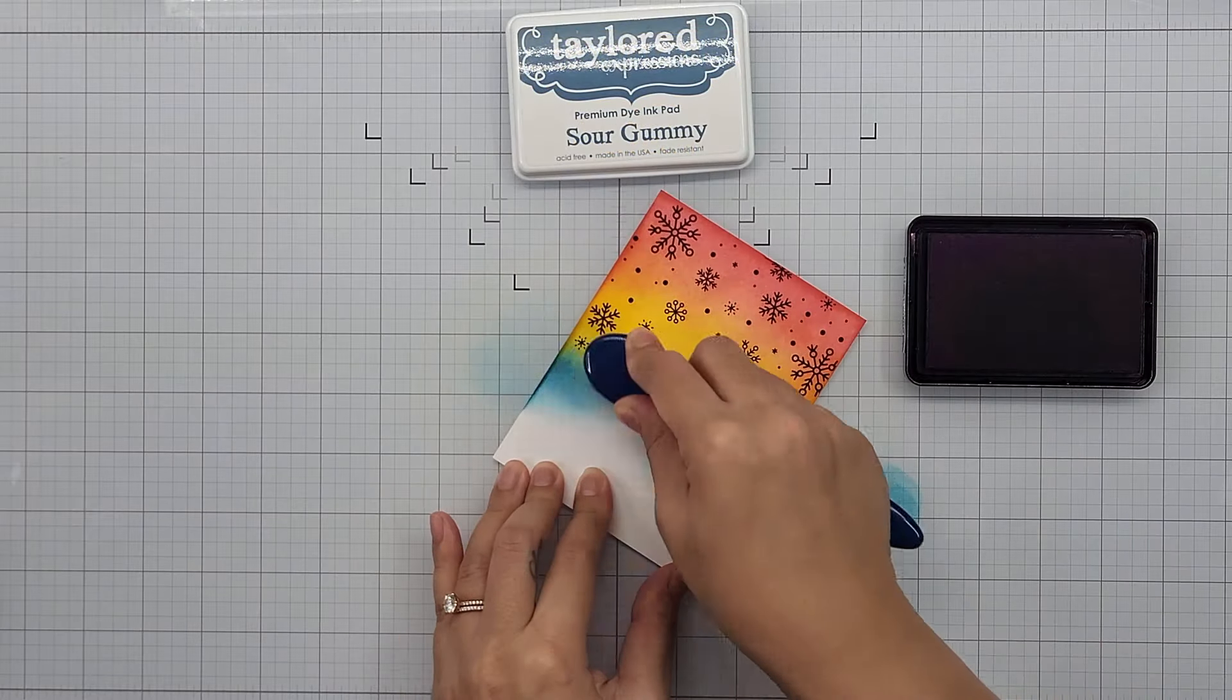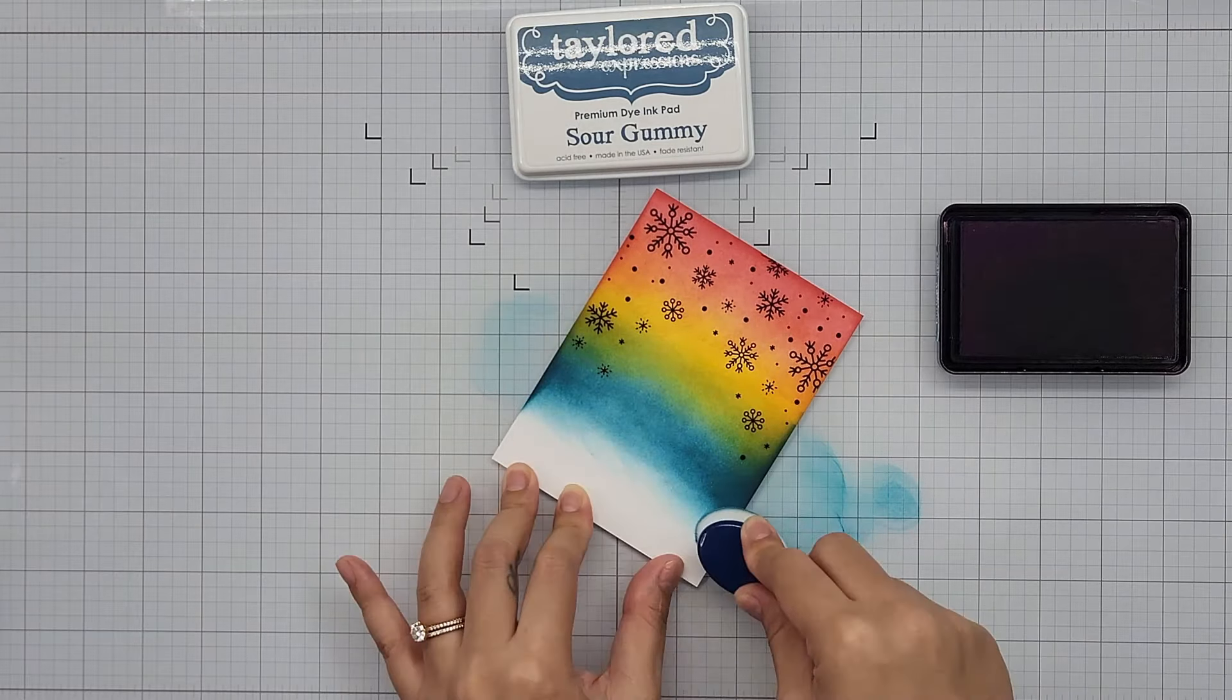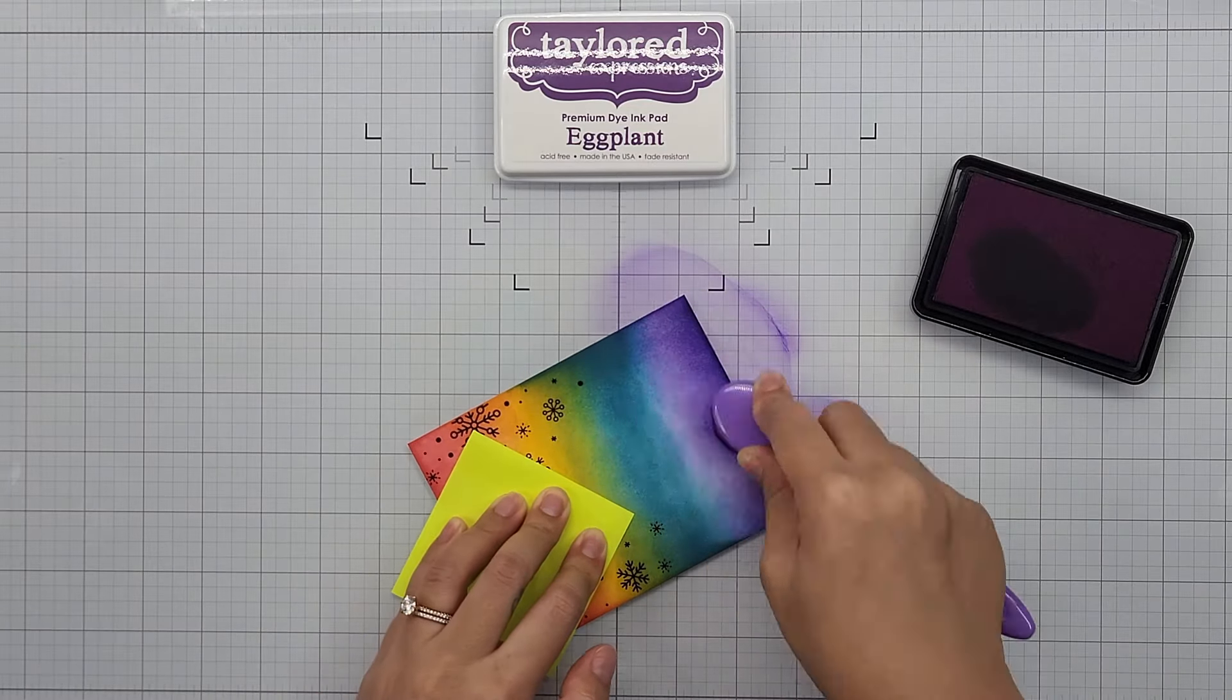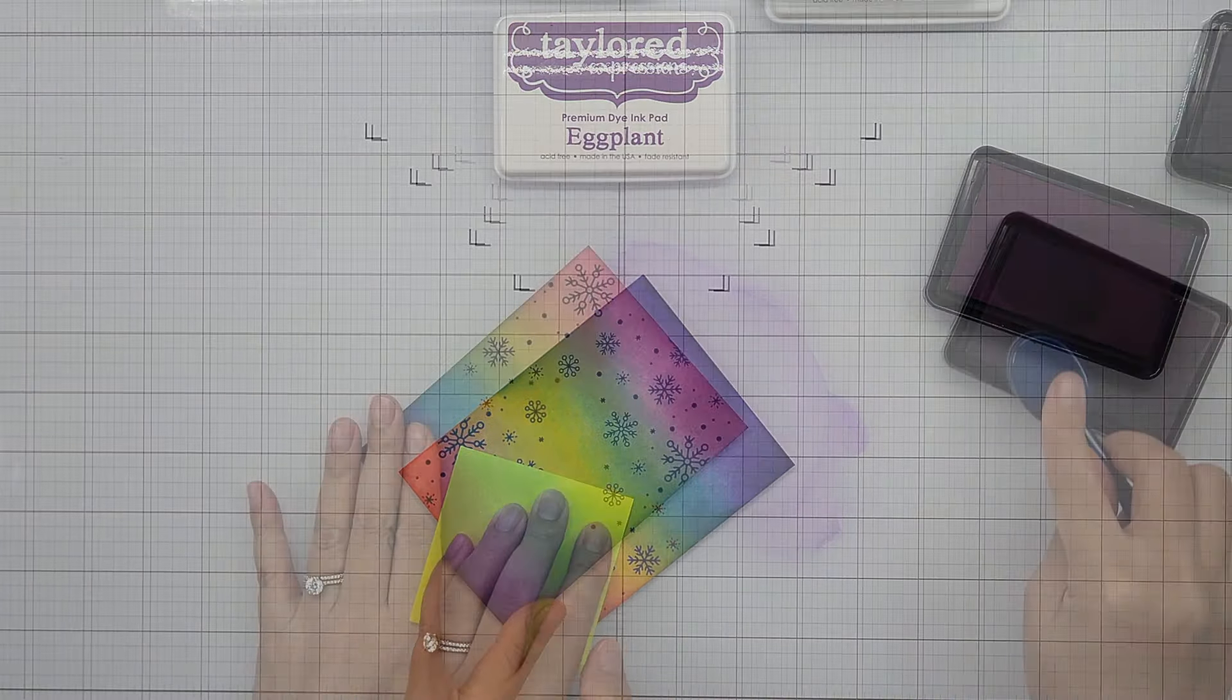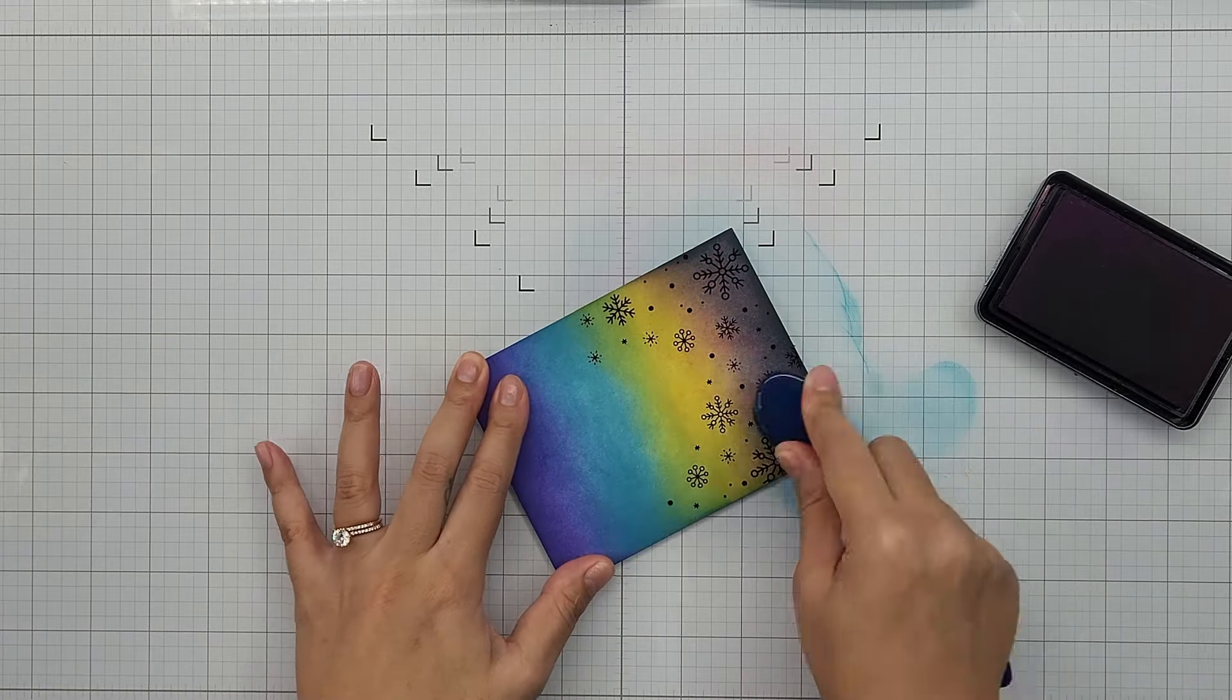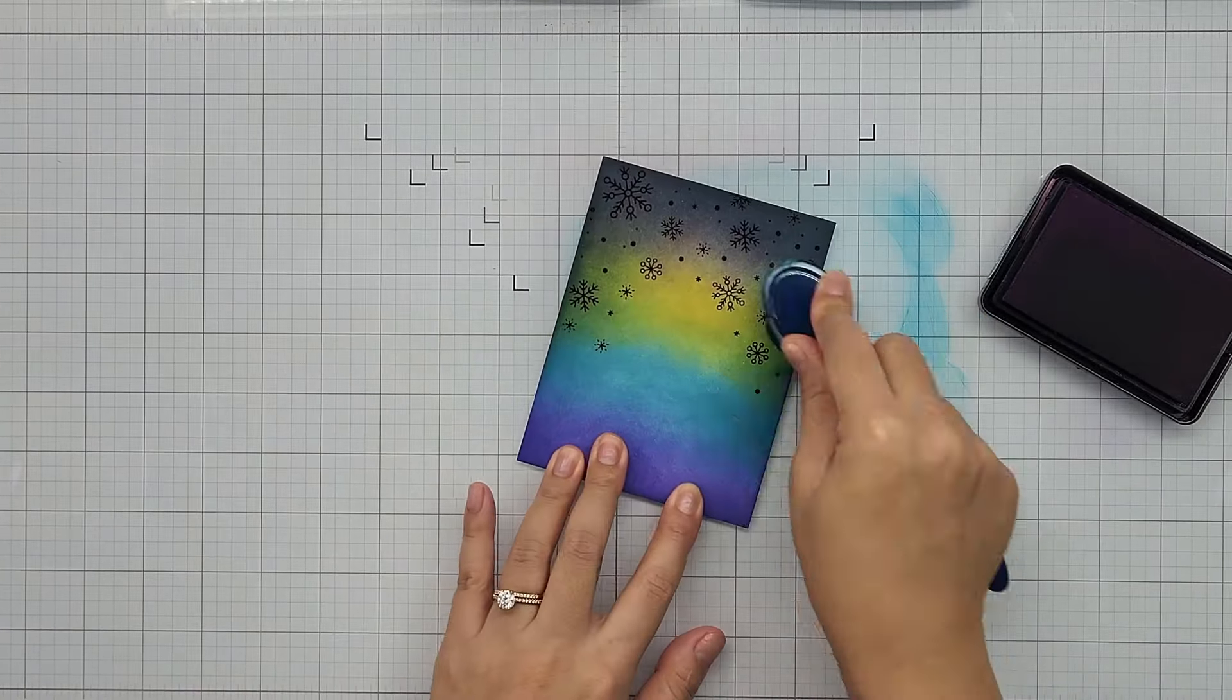I then use Sour Gummy and blending that color right next to Sweet Corn. I love how when you mix two certain colors together it creates a third color, and I really love this green shade that is creating here. And lastly I use Eggplant to blend the bottom portion of the card panel. This was initially what I was going for, but I decided that I wanted to create a darker night sky. So going back in with Sour Gummy, I am blending that color around the outer edges of the card panel. I'm pretty much covering up the Guava ink color here.